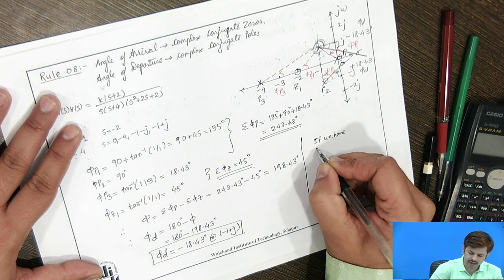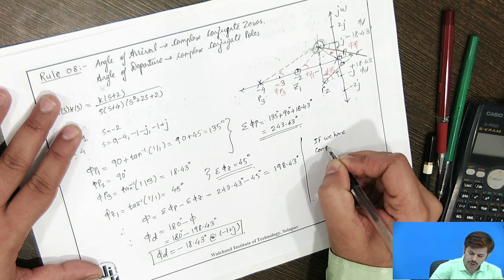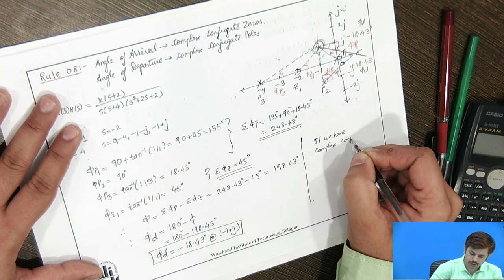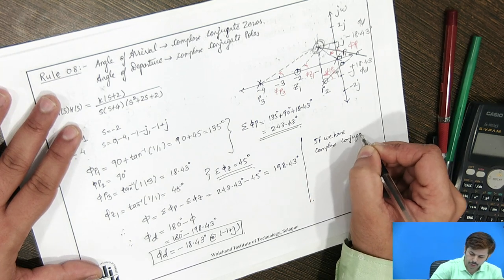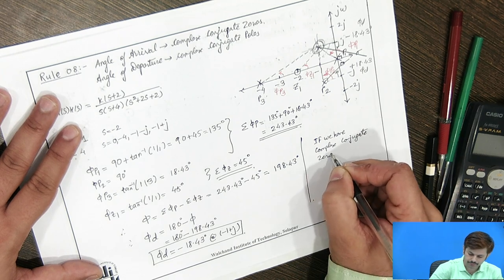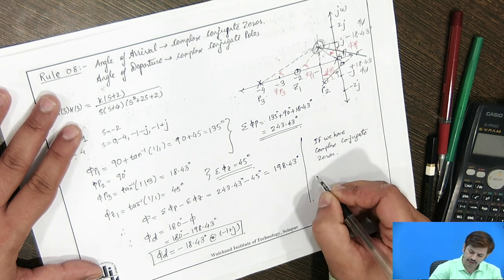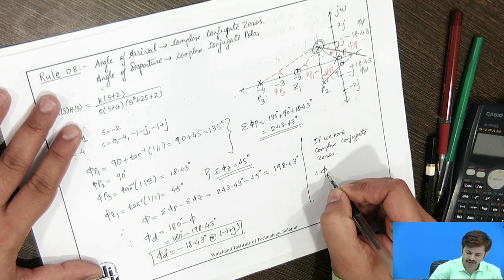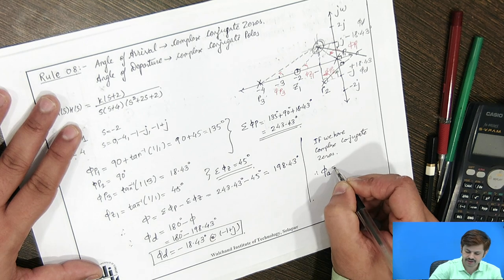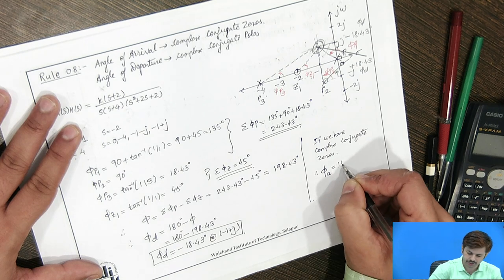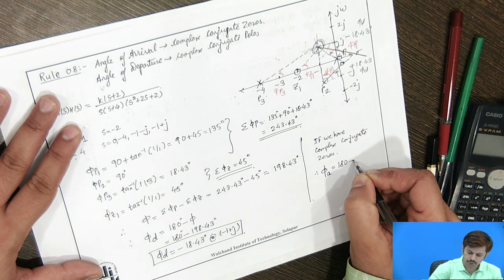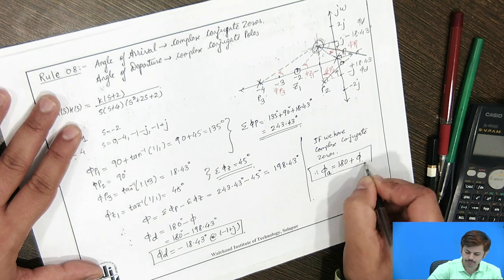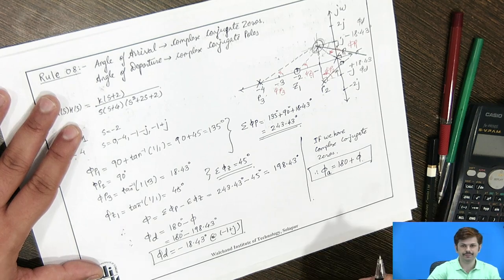If we have complex conjugate zeros, then we calculate the angle of arrival, which is φa = 180 + φ. The rest of the process is the same as for angle of departure.